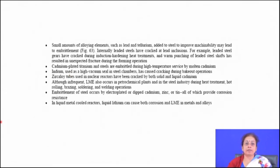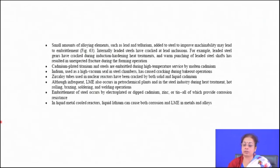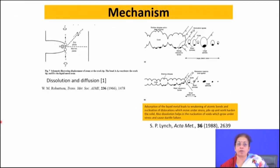Small amounts of alloying elements such as lead and tellurium, when added to steel to improve machinability, can lead to embrittlement phenomena. Cadmium-plated titanium and steel are embrittled at high temperature service by molten cadmium. Indium used as a high vacuum seal in a steel chamber causes cracking due to bake-out operations. Zircaloy tubes used in nuclear reactors have been cracked by both solid and liquid cadmium. Liquid metal embrittlement, like stress corrosion cracking, is very much environment-specific — not all materials undergo it in all environments.